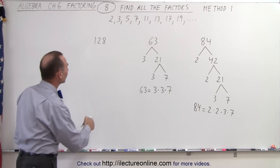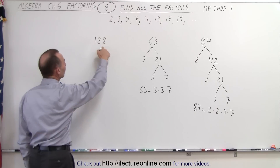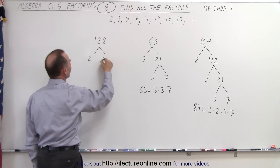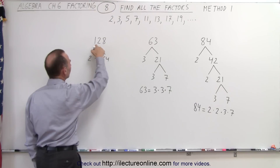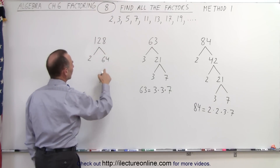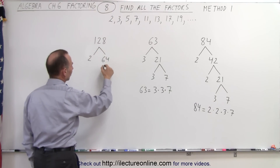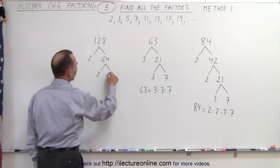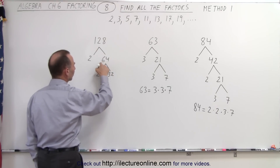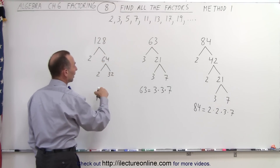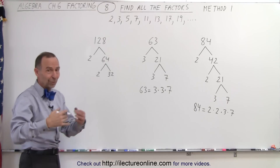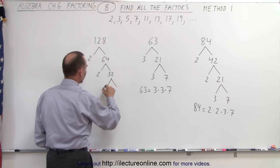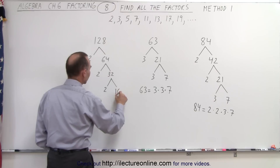Now let's try 128. It is even, which means we can divide it by 2. 2 goes into 128 sixty-four times. 2 times 6 is 12, 2 times 4 is 8. Now 64 is still even, which means we can divide it by 2. 2 goes into 64 thirty-two times. 2 times 3 is 6, 2 times 2 is 4. 32 is still even, so we can still continue with the number 2. So 2 goes into 32 sixteen times.